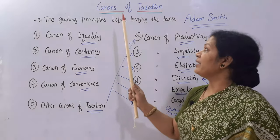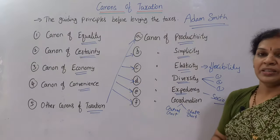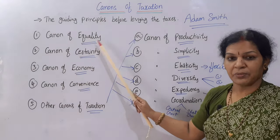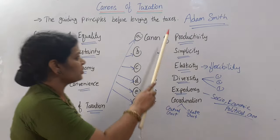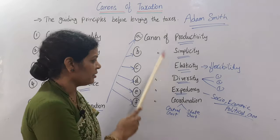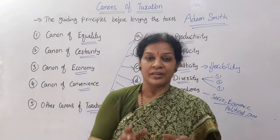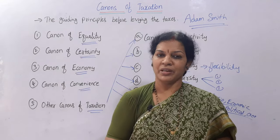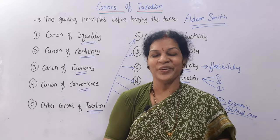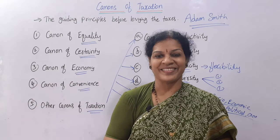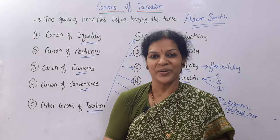To recap: canons of taxation are the guiding principles before laying taxation, introduced by Adam Smith. There are five main canons — equality, certainty, economy, convenience, and taxation — and other canons including productivity, simplicity, elasticity, expediency, and coordination. This is a simple but very important topic from an examination point of view. In the coming classes, we will cover one or two more topics before entering into practicals of taxation. Please check our playlist, use whatever matches your syllabus, and don't forget to share this video. Stay connected and have a wonderful career!